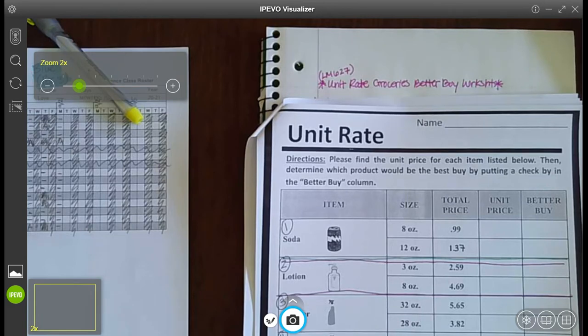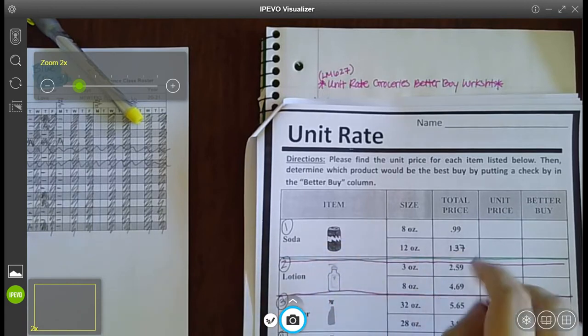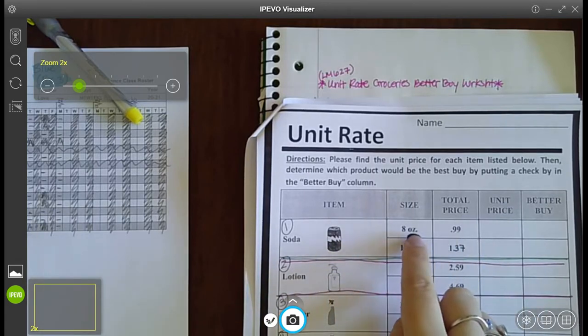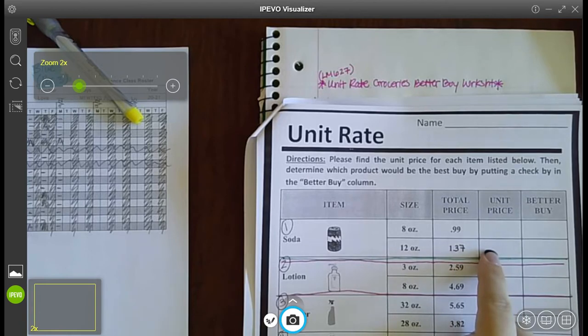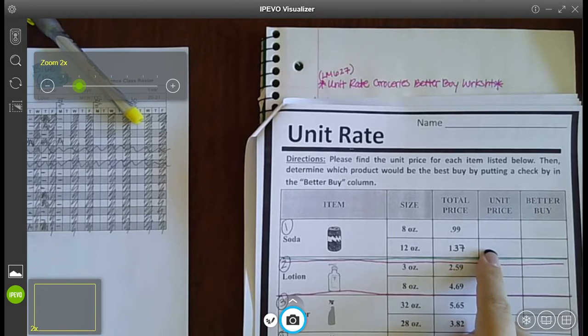Now for this one, it starts off with soda and it's sold for 99 cents for 8 ounces or $1.37 for 12 ounces, and you want to determine which one's the better buy. You do that by finding the unit price, which is a fancy way of saying unit rate, but it's more specific where you have money on the top.